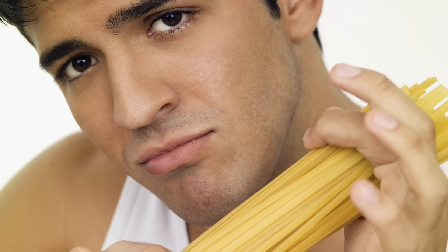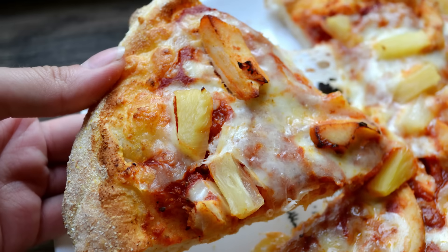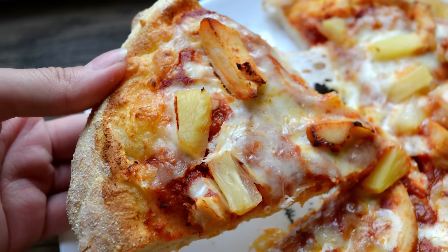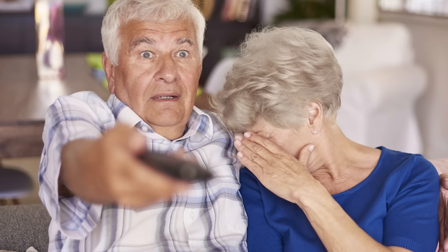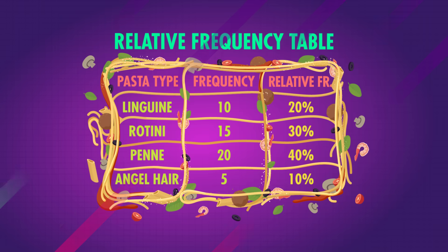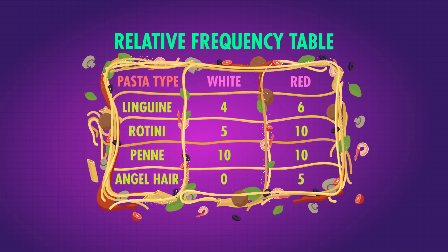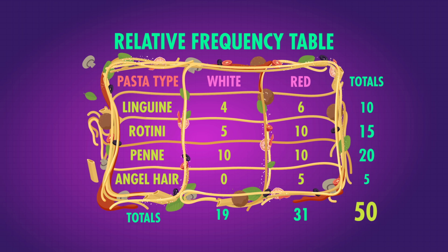Relative frequency tables have the benefit of being easy to compare. No matter what we're measuring or how many data points we have, it's easy to compare percentages. If 20% of people like linguine, we can see that's a smaller percent than the 67% of people who like pineapple on pizza, or greater than the 10% of my family who thinks statistics are scary. The relative frequency table for favorite pasta might look like this. We can also add more than one variable to our frequency table. We could ask people to rate their favorite pasta sauce and make a combined frequency table, or a contingency table, of both pasta and sauce preference.